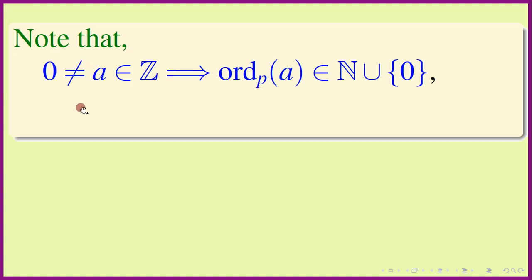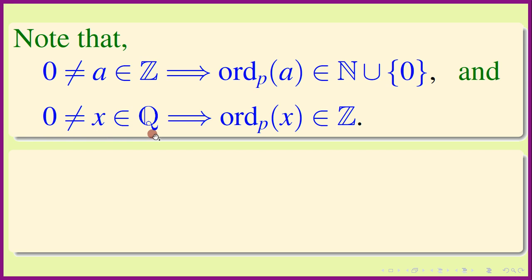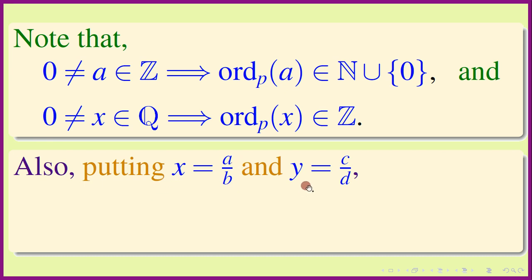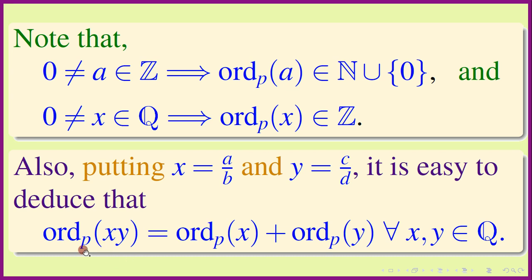Note that if a is a non-zero integer, then the p-adic valuation of a is a non-negative integer, whereas if x is a non-zero rational number, then the p-adic valuation of x is an integer — positive, negative, or zero. Also, putting x = a/b and y = c/d, it is easy to deduce that the p-adic valuation of the product of two rational numbers equals v_p(x) + v_p(y), so the logarithm-like behavior holds for rationals as well.